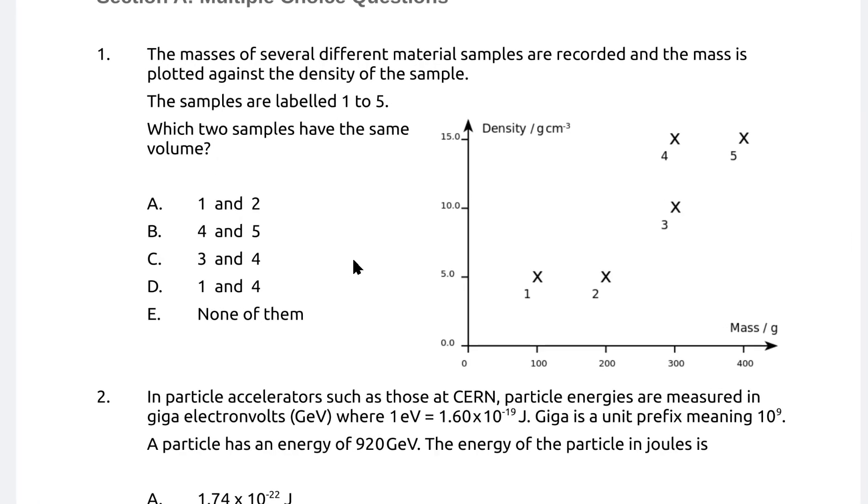Question one: The mass of several different material samples are recorded. The mass is plotted against the density. So on the y-axis we have density, on the x-axis we have mass. Which two samples have the same volume? We're going to use the equation that density is equal to mass over volume. This, of course, means that the volume will be equal to the mass divided by the density. So for each of those points, all we need to do is take the mass, divide it by the density and work it out.